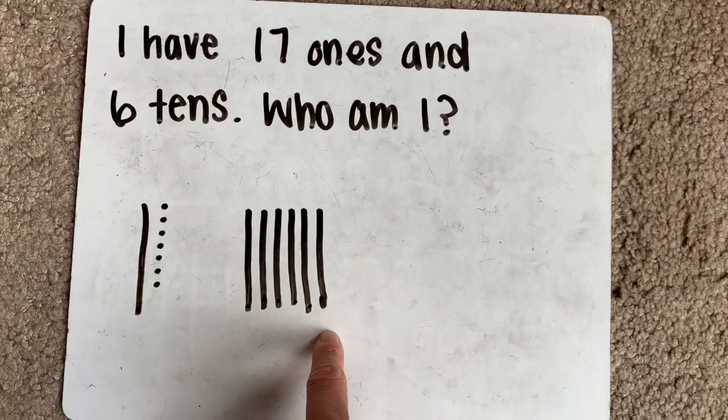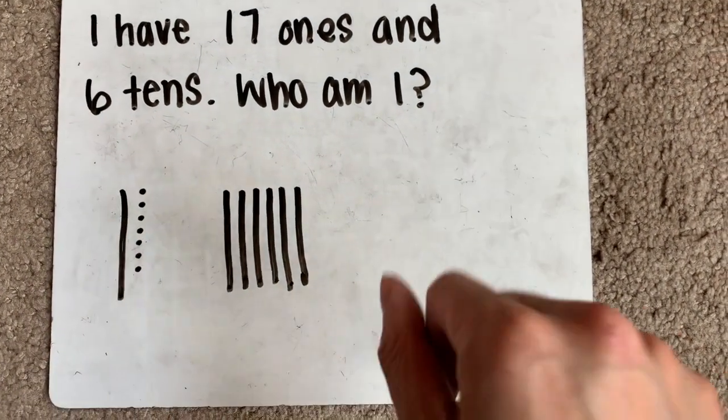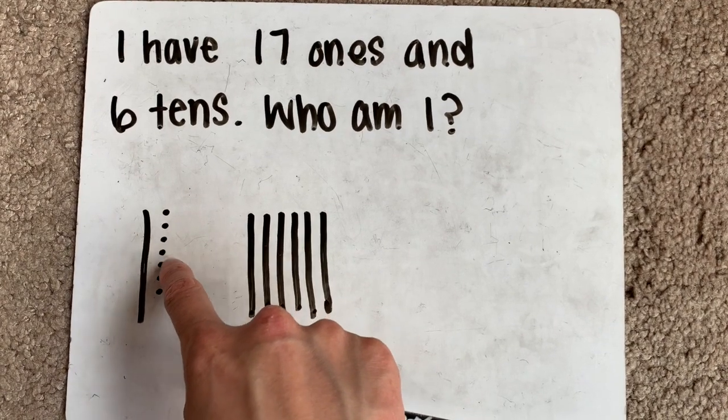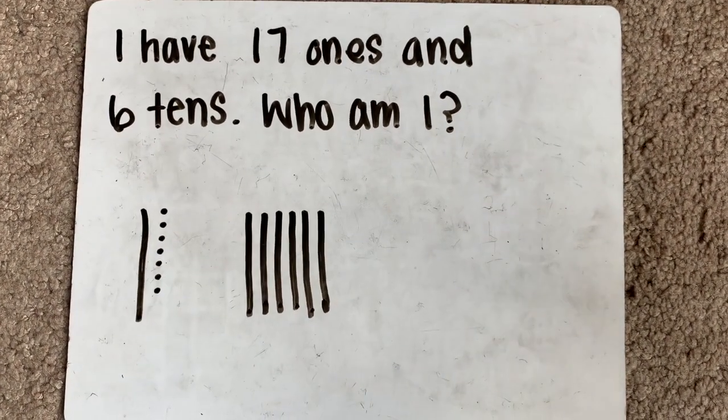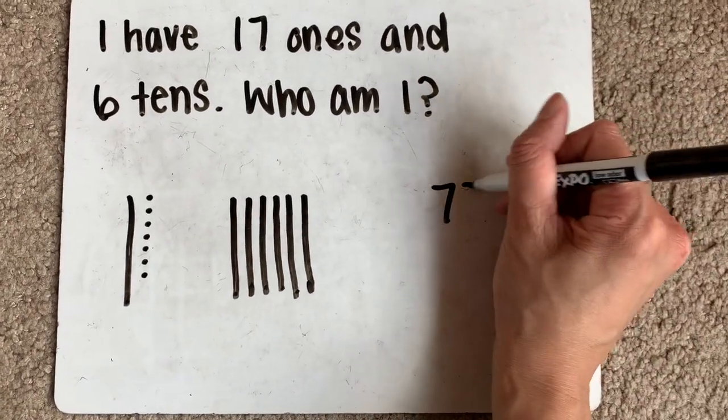You might also know right away that 6 tens and 1 more ten is 7 tens. 7 tens and 1, 2, 3, 4, 5, 6, 7 more. 7 tens and 7 more is the number 77.